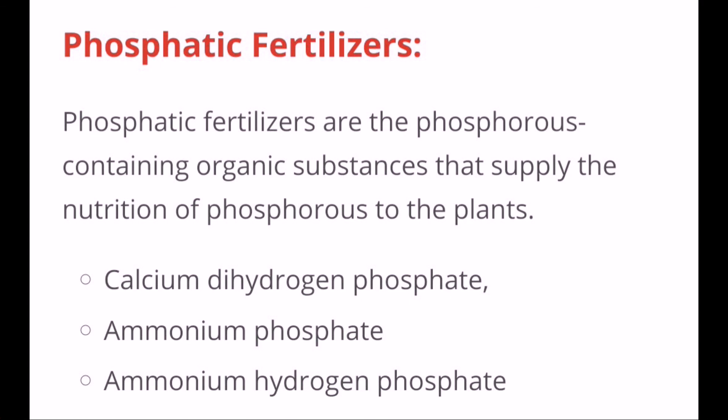Next are the phosphorus fertilizers, such as ammonium phosphate, ammonium hydrogen phosphate, and calcium dihydrogen phosphate. Phosphatic fertilizers improve root structure and root growth.